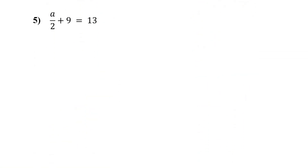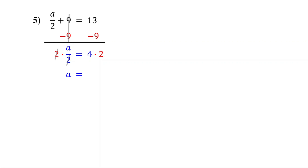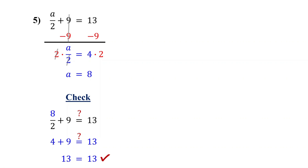Now what if the variable is being divided by a number, like a over 2? Don't worry — the goal is still the same: to isolate the variable using the opposite operation. First, isolate a over 2 by subtracting 9 from both sides. On the left, the 9s cancel out, leaving a over 2. On the right, 13 minus 9 is 4. Now notice that a is being divided by 2. So to get a by itself, we do the opposite of division: we multiply by 2, and we multiply both sides to keep the equation balanced. On the left, the 2s cancel out, leaving a. On the right, 4 times 2 is 8. So the solution is a equals 8. Let's check: plug in 8 for a, and 8 divided by 2 is 4, and 4 plus 9 is 13 — that matches the right side, so our solution is correct.